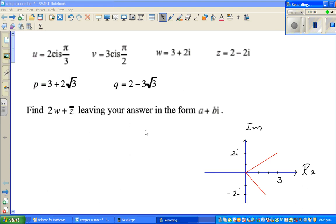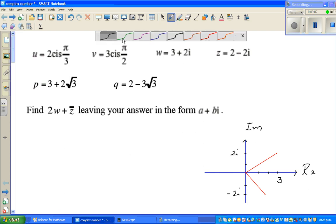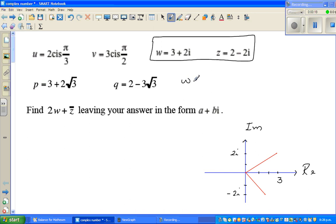Let us look at this question on complex numbers. The question is, you want to look at W and Z. So W is 3 plus 2i and Z is 2 minus 2i.